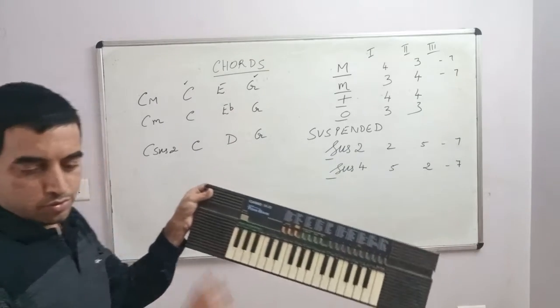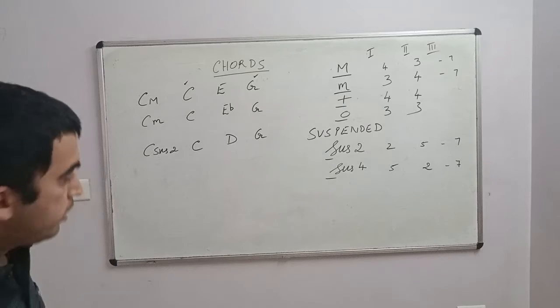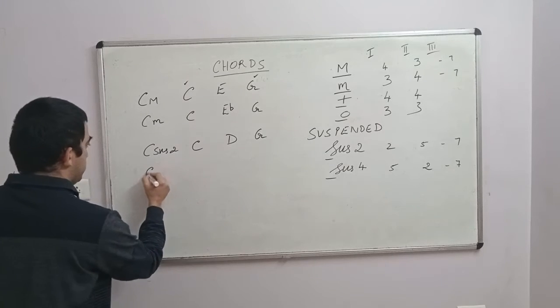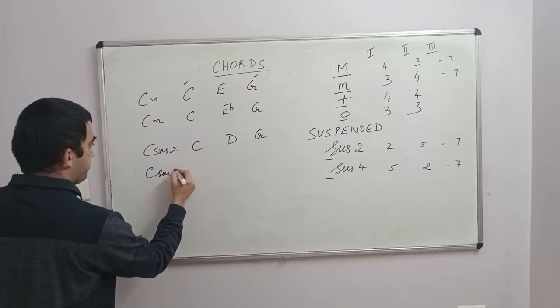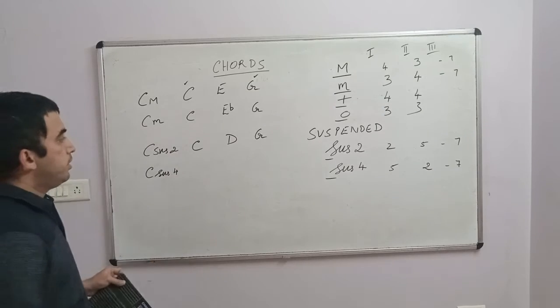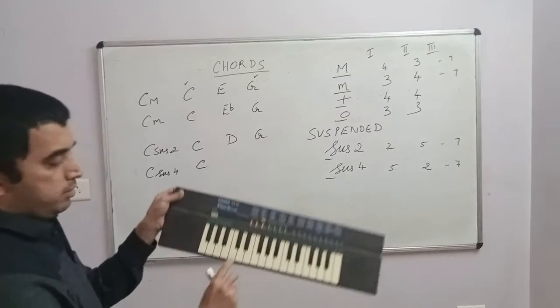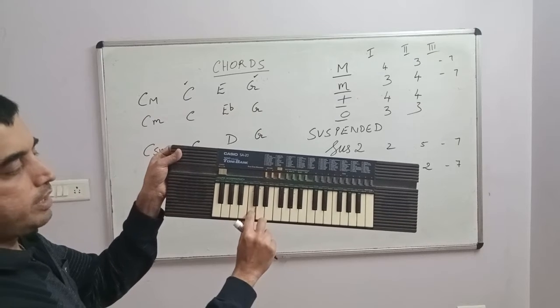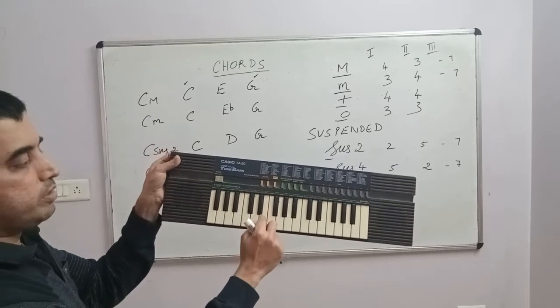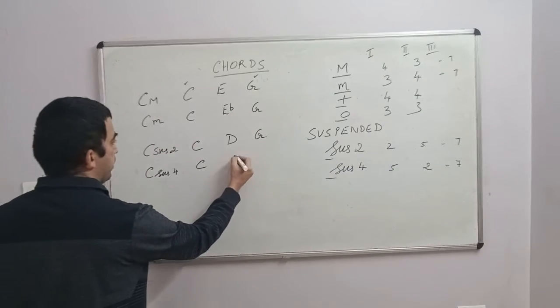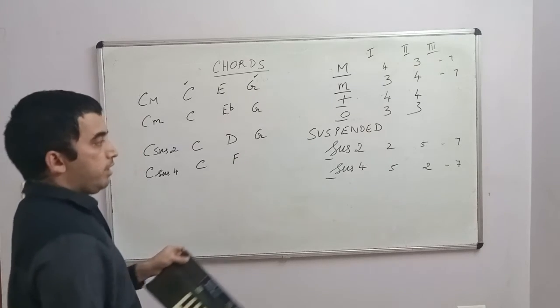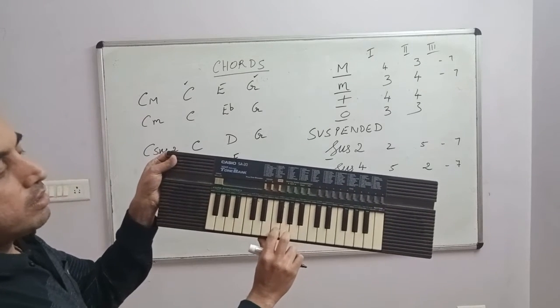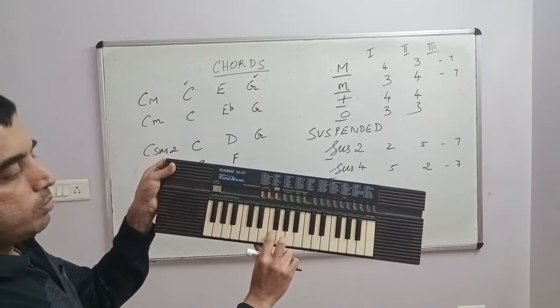Okay, so that is C sus2. And if you go to C sus4, the first note will be again C, the C note. Then you count one, two, three, four, five. That will be F. And the third note will be two semitones from F.